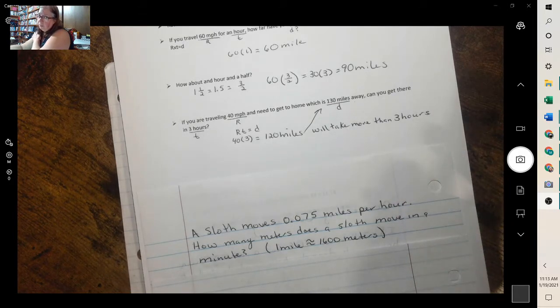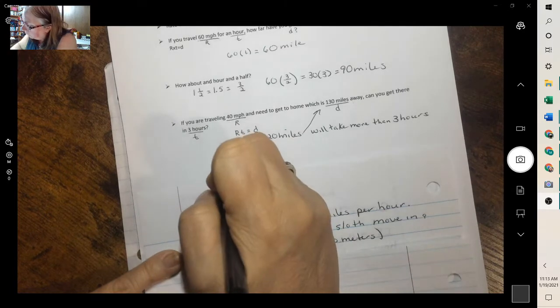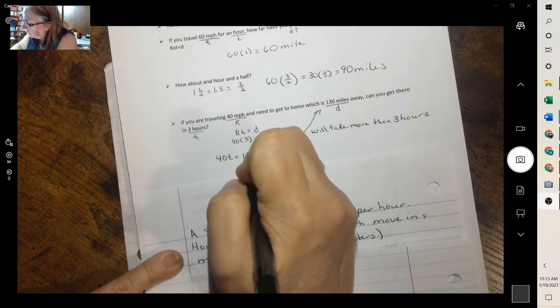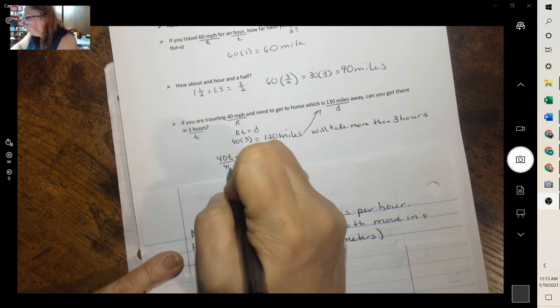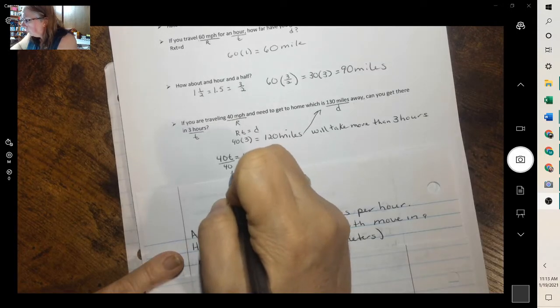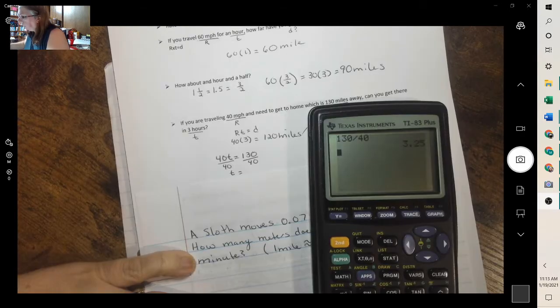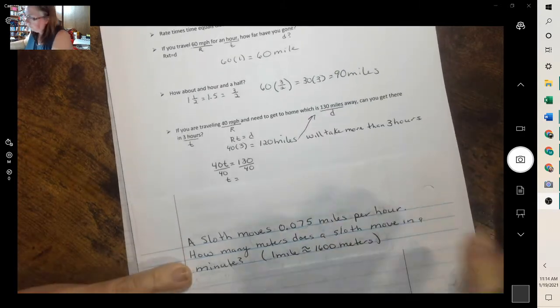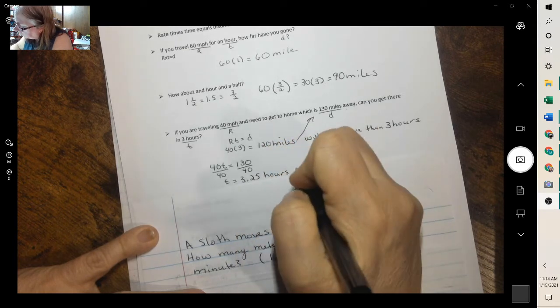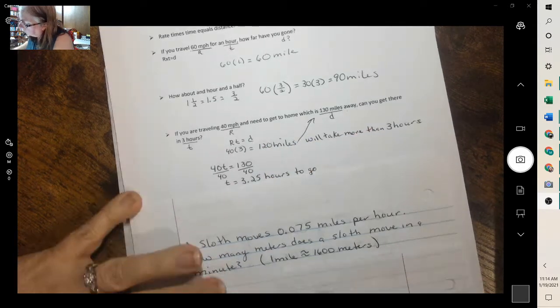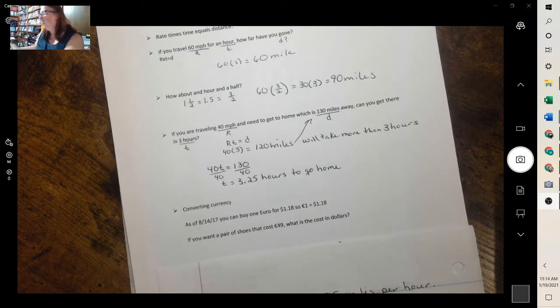But how long would it take us? If we want to find out how much time it will take to go 130 miles, that means we're looking for T. So we'd have 40T equals the 130 miles that we need to go. To solve that, since this is multiplied, we would divide by the 40. 130 divided by 40 is 3.25. So it will take 3.25 hours to get home.